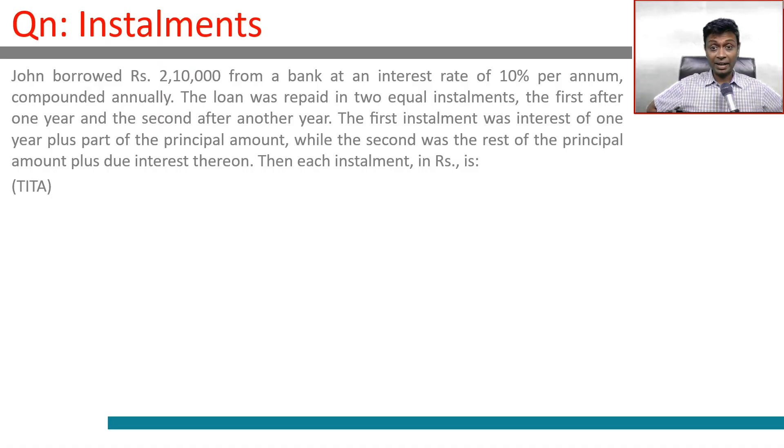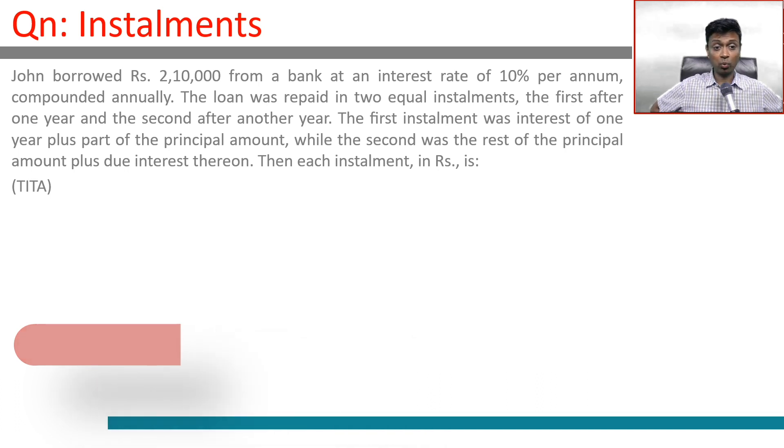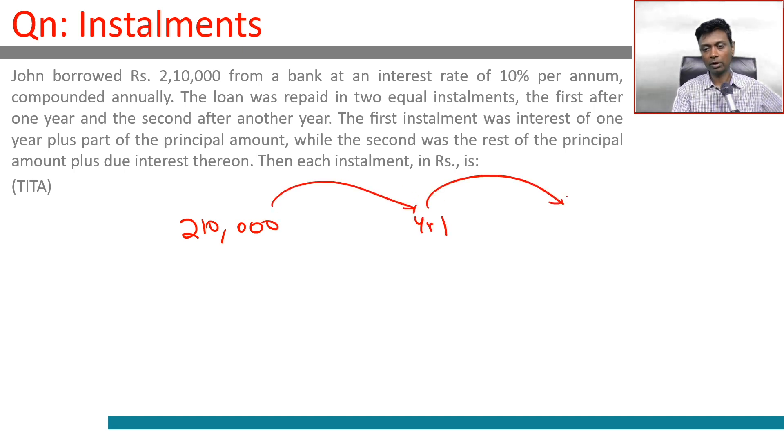John borrowed 2,10,000 from a bank at an interest rate of 10% per annum, compounded annually. The loan was repaid in two installments, the first after one year and the second after another year. The first installment was interest of one year plus part of the principal amount, while the second was the rest of the principal amount plus interest thereon. So 210,000 year 1 and year 2.